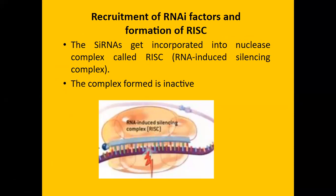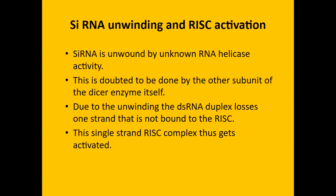Recruitment of RNA interference factors and formation of RISC: the single-stranded interfering RNA is incorporated into a nuclease complex called RISC — RNA-induced silencing complex. The complex formed is initially inactive. A single-stranded RNA unwinding step activates RISC via an unknown RNA helicase activity, possibly carried out by other subunits of the DICER enzyme itself. During unwinding, the double-stranded RNA duplex loses one strand not bound to RISC.